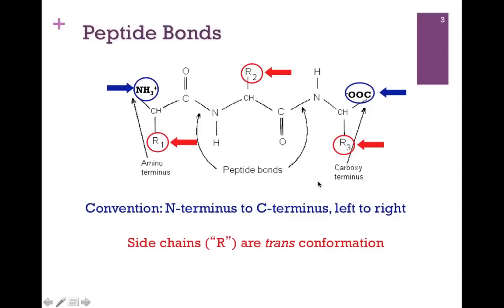The convention in writing the amino acid sequence is to write it left to right from the N to the C terminus because this is the way in which it is synthesized in the cell. Notice also that the side chains or R groups are in the trans conformation, that is, they're oppositely oriented with respect to one another. This is the most stable conformation.